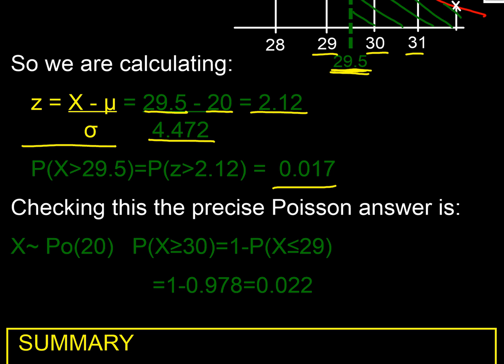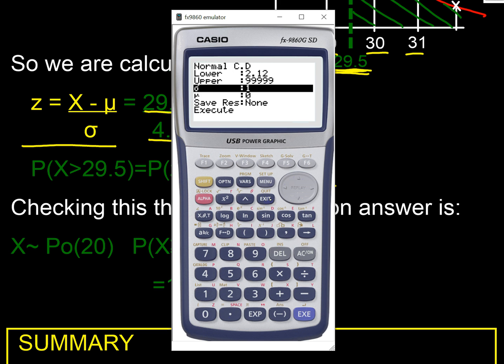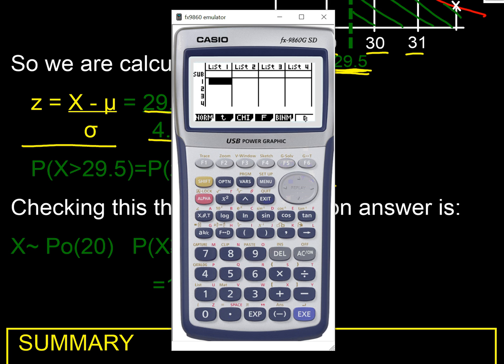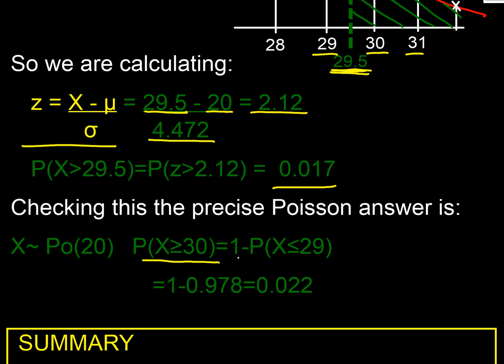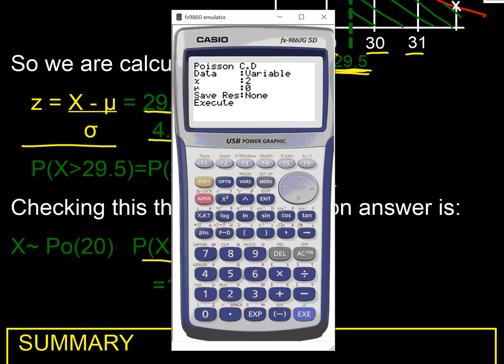Let's just quickly check that out against the precise answer if we use the Poisson. Distribution, the Poisson's off the end here, there is Poisson within PCD. We're going to have to do 1 minus here because in Poisson we can only go from the left-hand end, a bit like binomial. So what we have to do is, we're looking for the probability that x is greater than or equal to 30, and to calculate that we have to do 1 minus, so the complementary probability that x is less than or equal to 29.